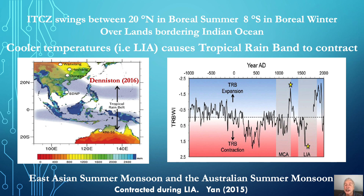The Little Ice Age was the Earth's coldest period in over 10,000 years. Yet, despite global warming theory, it created some of the worst droughts — droughts that caused the collapse of many societies, such as the Ming Dynasty in China and the Khmer Empire in Cambodia.